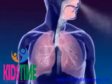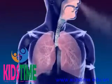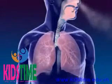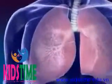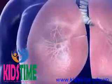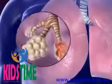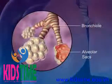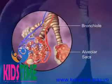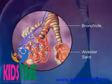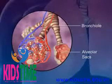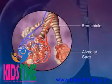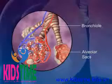Lungs are spongy tissue with alveoli and blood capillaries. Breathing occurs because of the expansion and contraction of the lungs. The bronchi carrying the air subdivide into smaller branches called bronchioles. At the end of each bronchiole are the alveolar sacs, which are surrounded by blood capillaries and contain millions of single-layer alveoli cells where gas exchange takes place.